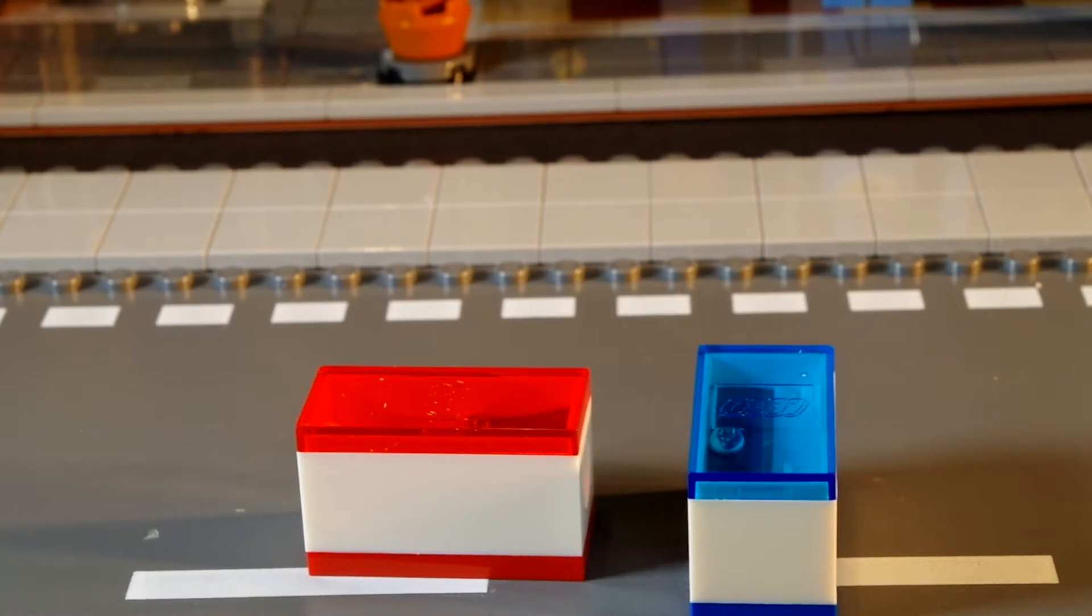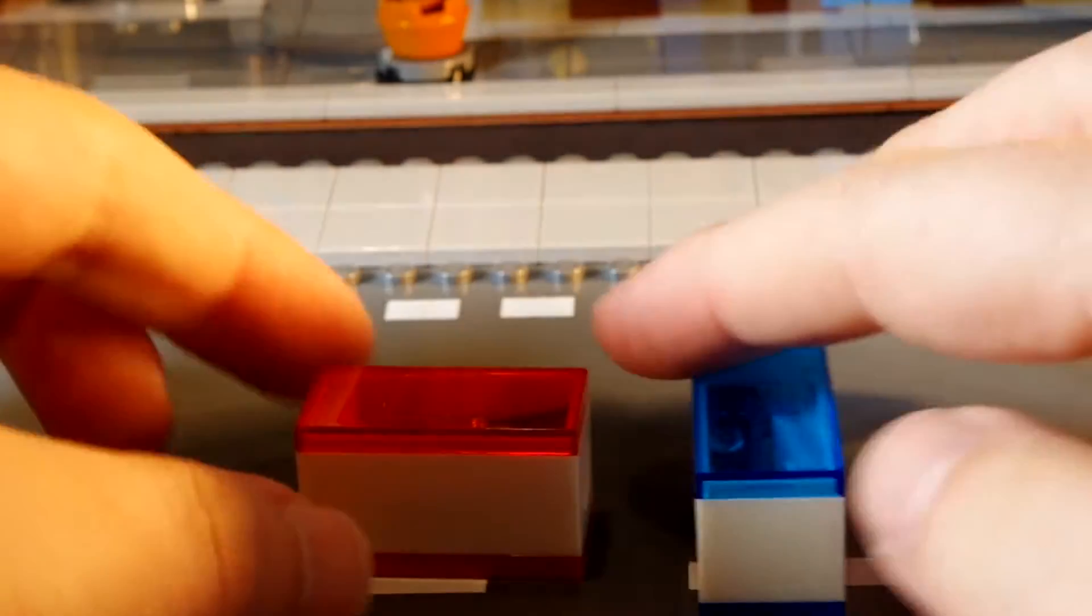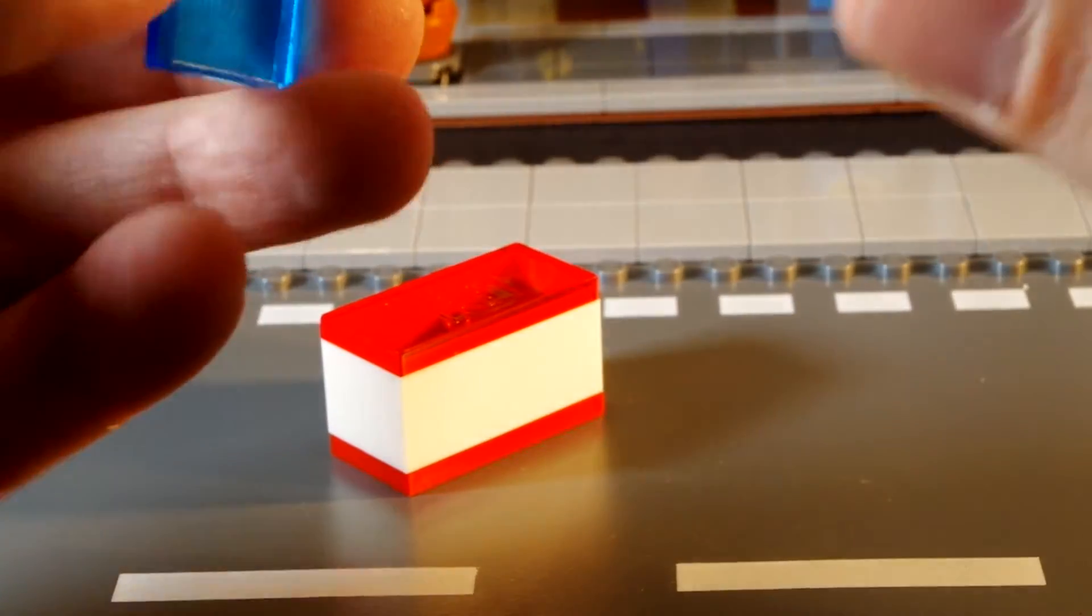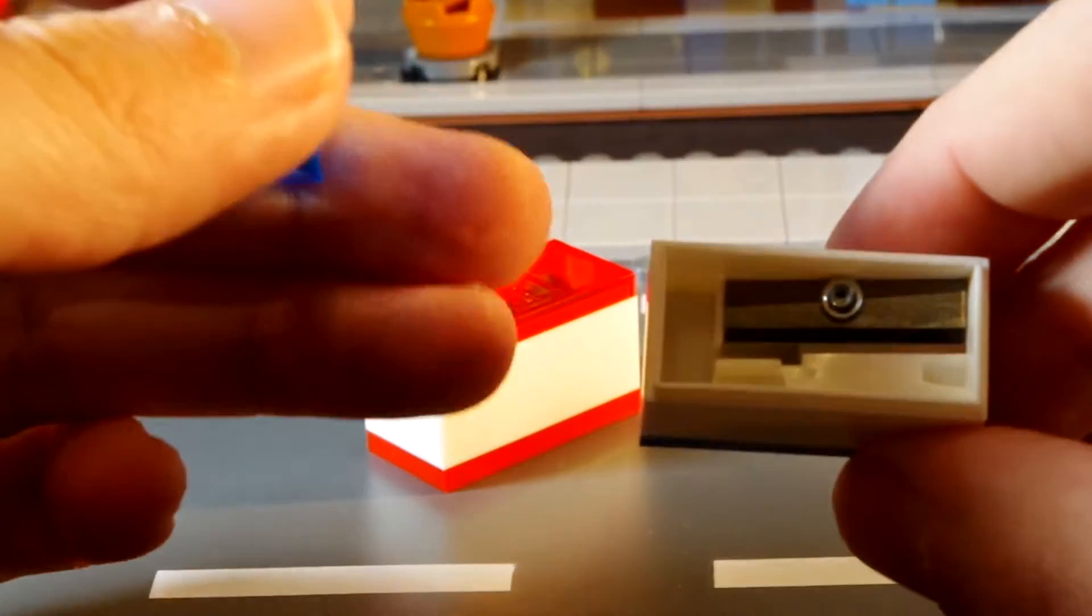So here are the two pencil sharpeners that you get in this set and as you can see they're quite plain actually. They're a little disappointing. I think the build quality is quite good but you know what, it's a pencil sharpener. What could you possibly do to make a pencil sharpener much better? The lid is nice. It's branded with Lego. Not much else I can say there.